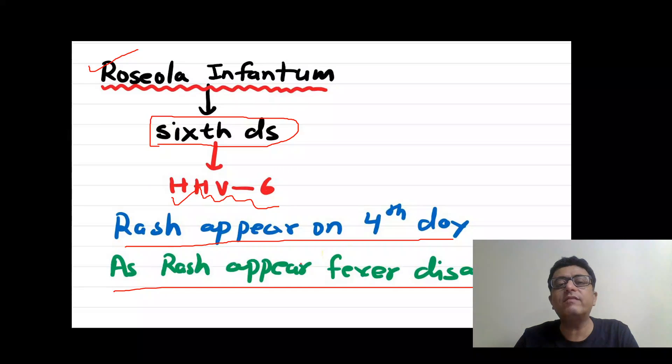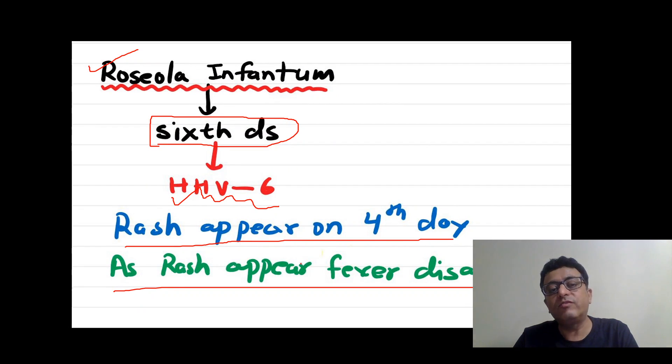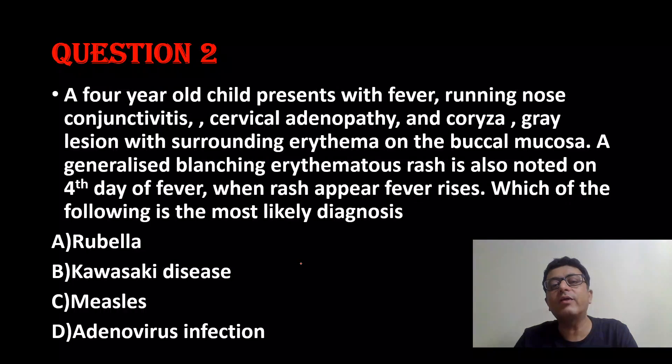Roseola infantum is also known as sixth disease, caused by human herpesvirus type 6. I will discuss fifth disease later in the session.